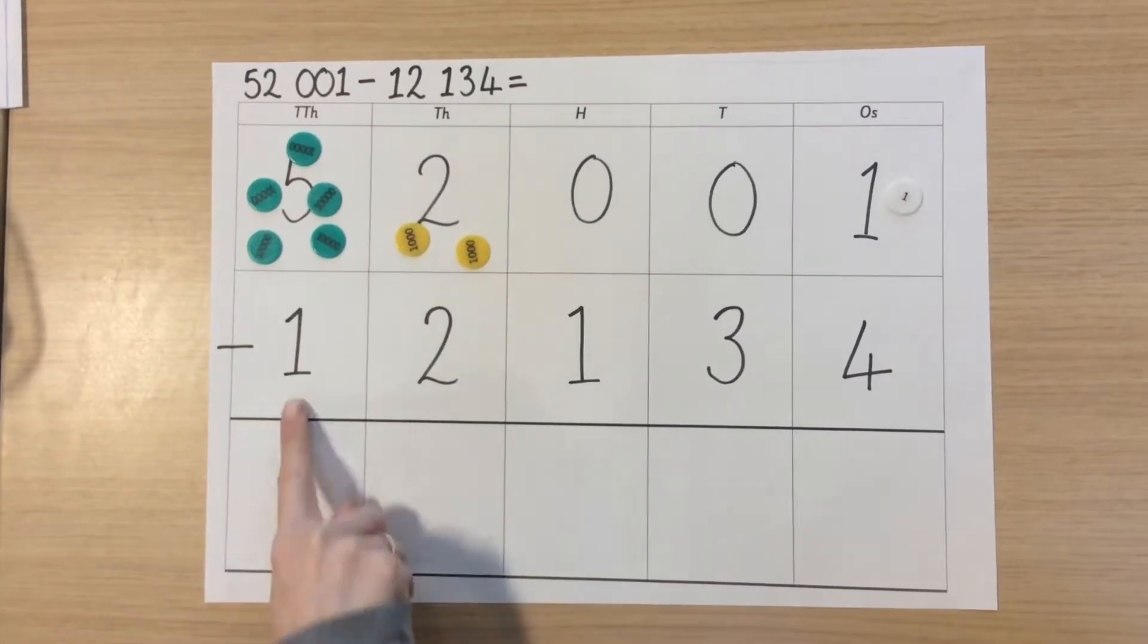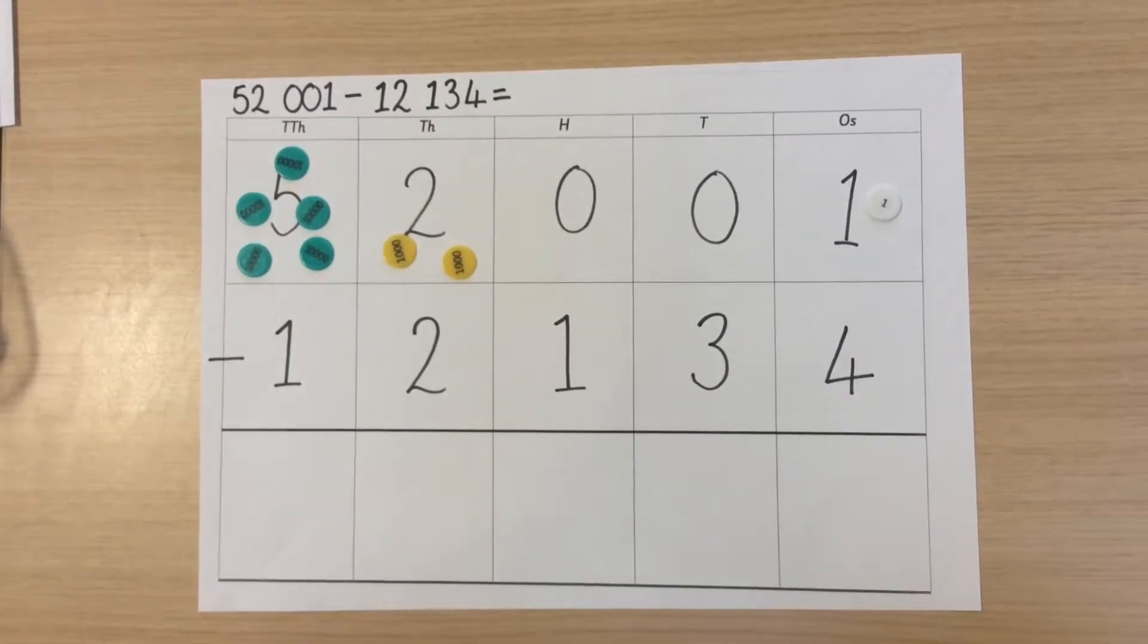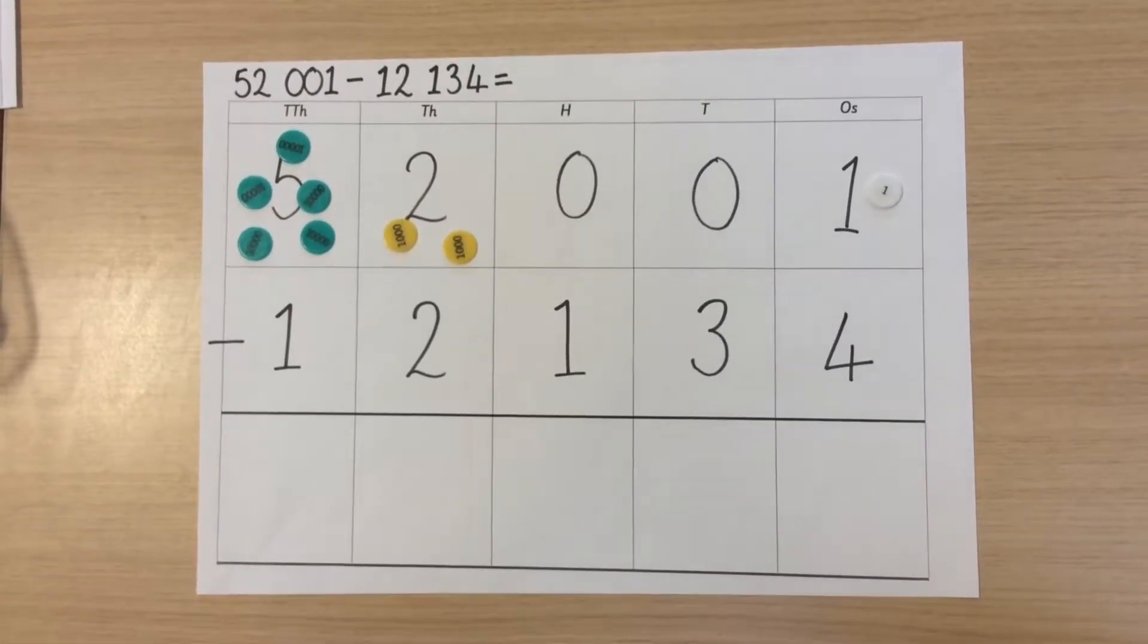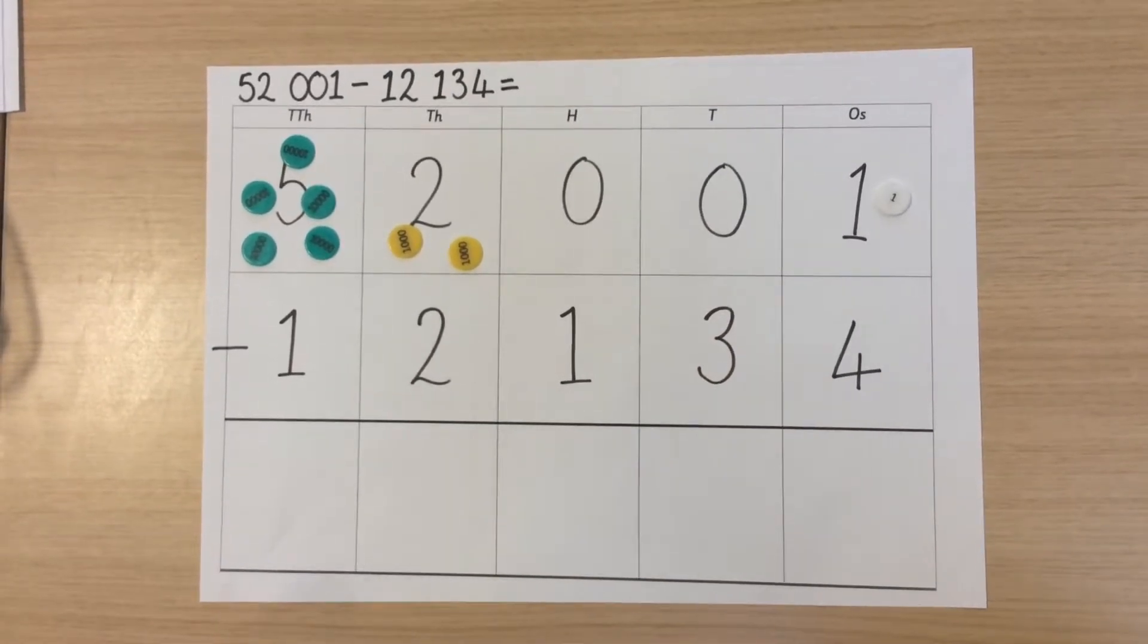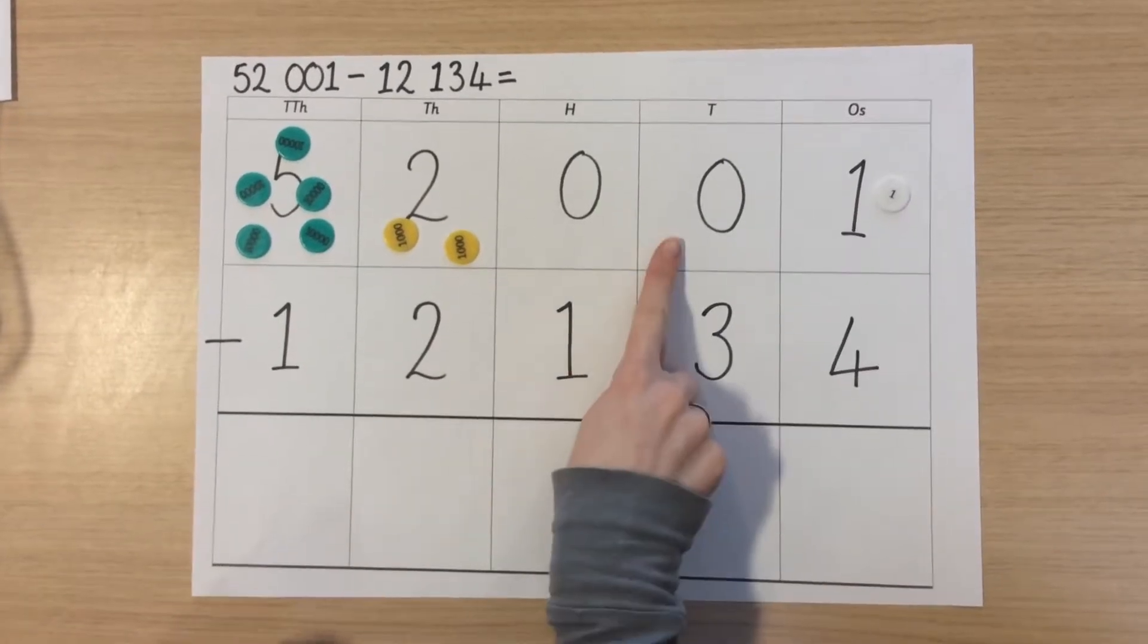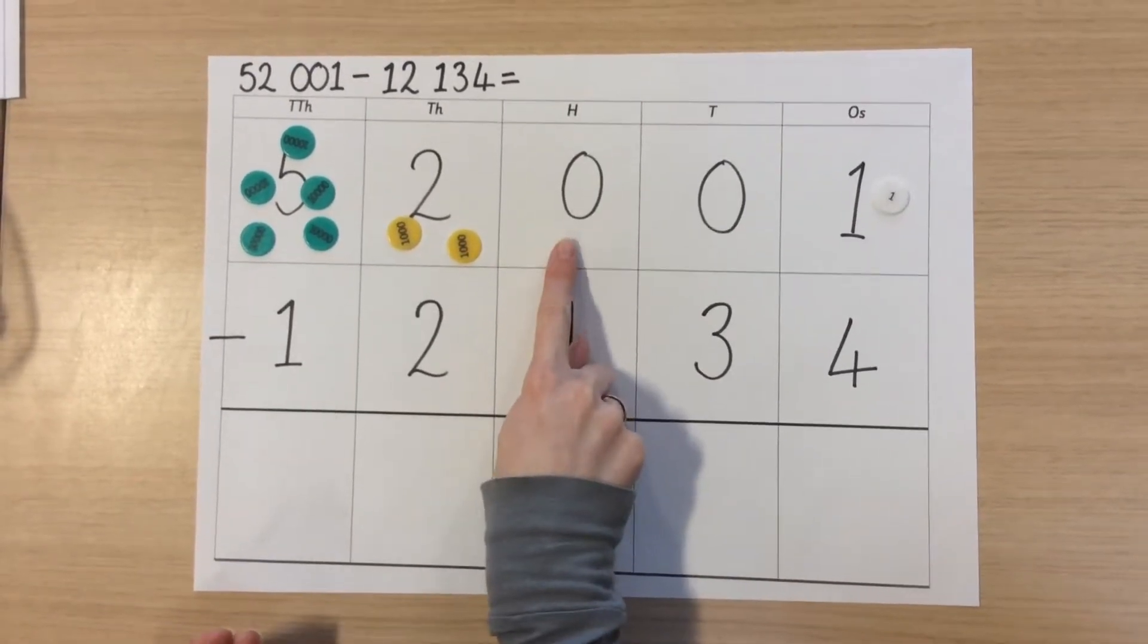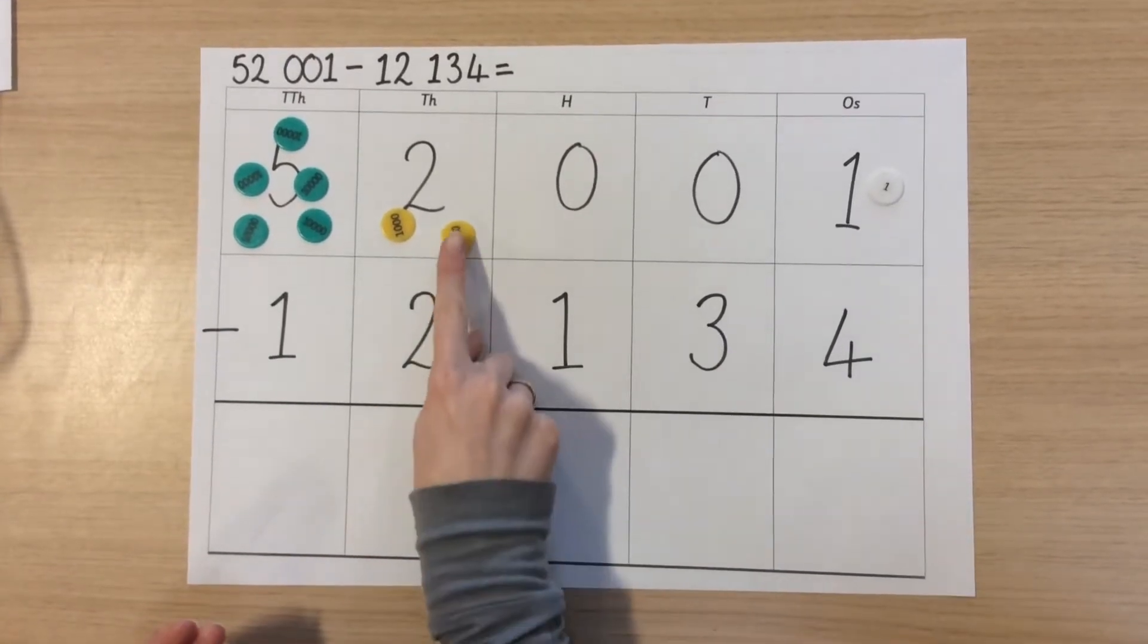We do not need any counters in the next row as this is a subtraction calculation. We begin in the smallest place value column. One take away four. We will need to exchange straight away. We cannot exchange in the tens or the hundreds column as we only have place value holders. Therefore we need to go into our thousands column.